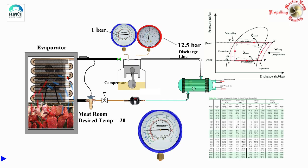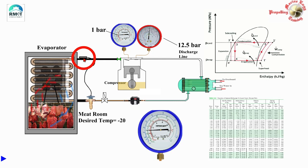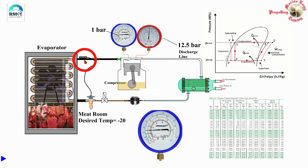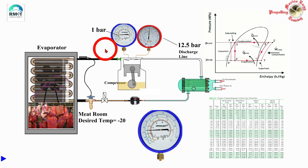By the time the refrigerant comes near the exit of the evaporator, we expect that the liquid freon should be completely converted to gas, and in the last part of the evaporator the gas should actually be heating up. So we expect that when the refrigerant gas is leaving the evaporator, it should be in a superheated state. This is controlled by the expansion valve, which gets inputs from a bulb attached to the return line pipe going to the compressor suction. This bulb ensures that the refrigerant gas leaving the evaporator is in a superheated state.